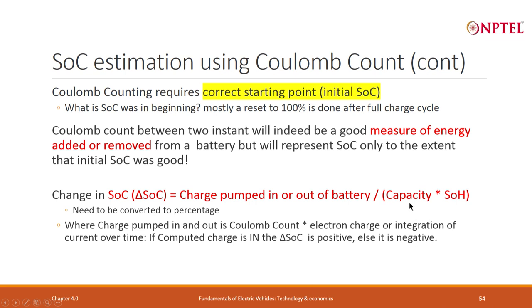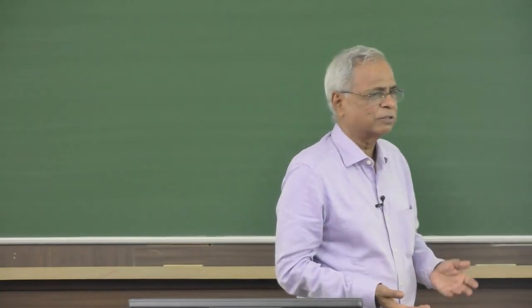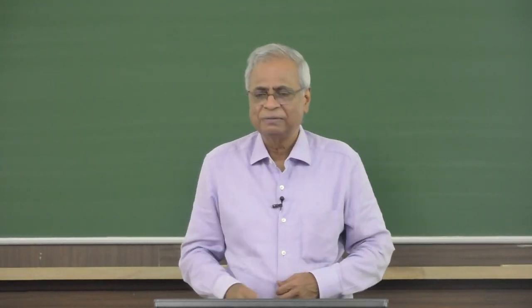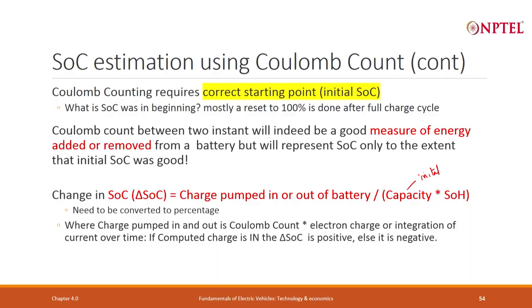Current capacity of the battery is the initial capacity multiplied by SOH. So suppose you have a 10 kWh battery and it is new — SOH is 1. Then charge pumped in and out divided by 10 kWh, converted to energy, gives the change in state of charge. If the battery is not new, you have to know the state of health. Suppose SOH is 90 percent — then 0.9 times initial capacity, take the charge pumped in and out, and that gives you the actual delta SOC.